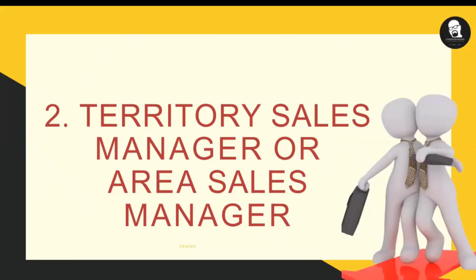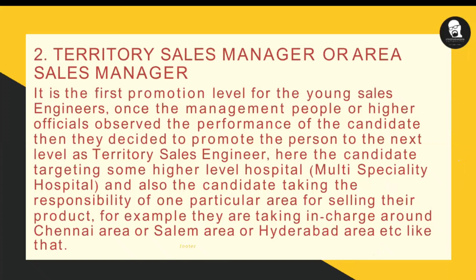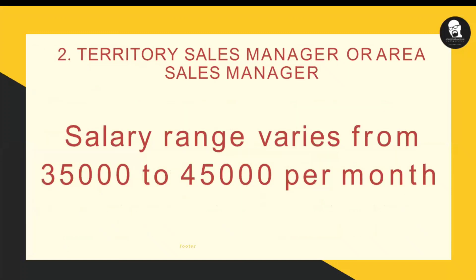The next promotion level is tertiary sales manager or area sales manager. This position is exclusively given to the sales engineer once he has performed well during the sales executive designation — selling most products to customers and generating most revenue for the company. In this position, you are allowed to go to multi-specialty hospitals and high-profile doctors to sell products. At the same time, you monitor the junior level sales executives, who report to you daily. The salary range is around 35,000 to 45,000 rupees per month.